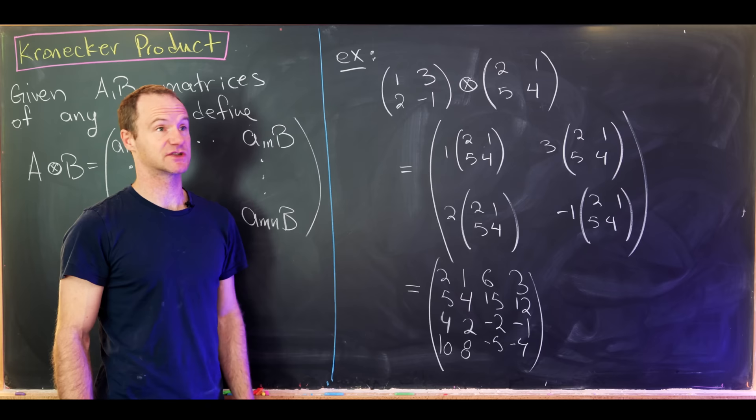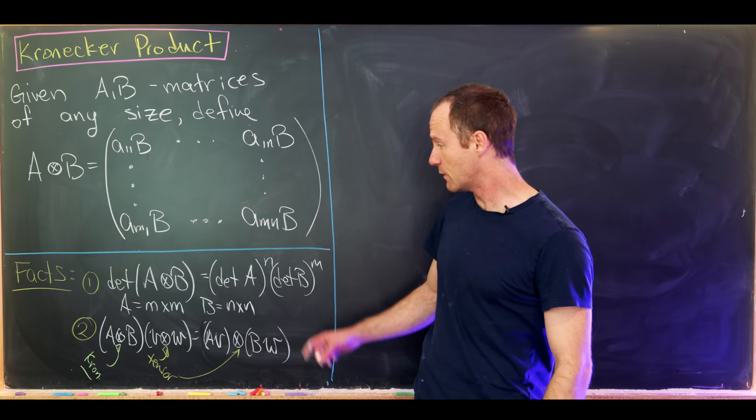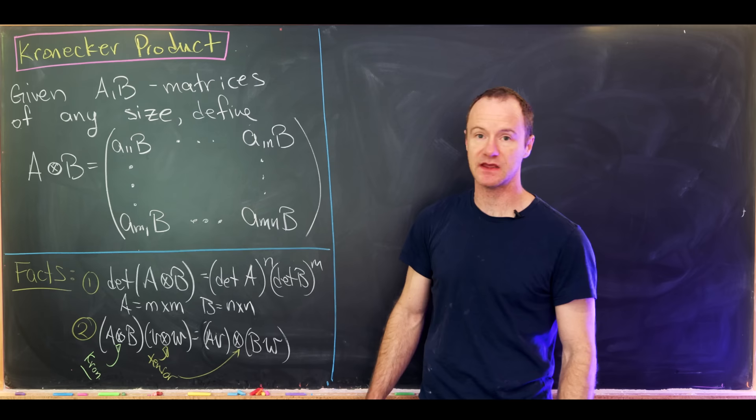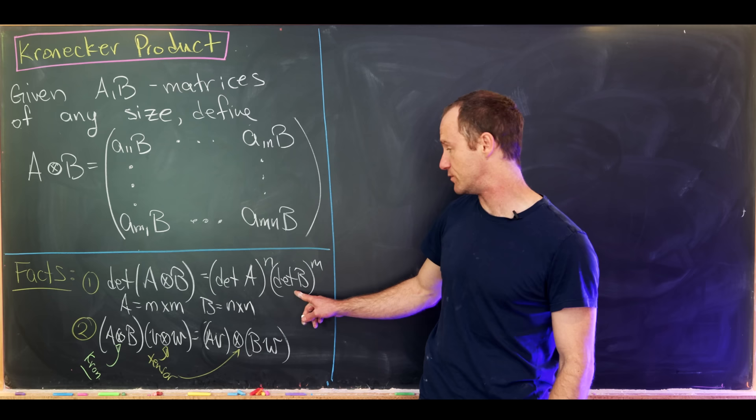Next, we'll prove a certain result related to the Kronecker product and talk about why it's an important object. The result we'll prove is: if A is an m×m matrix and B is an n×n matrix, then the determinant of the Kronecker product A⊗B equals the determinant of A to the nth power times the determinant of B to the mth power. This is a pretty nice result.